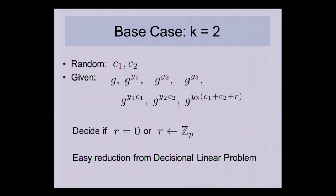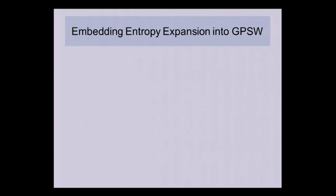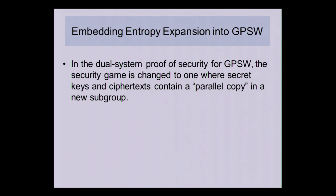This is the base case of the lemma when k equals 2. For general k we proceed by induction. Now, how do we embed this result — once we have it for all k — into GPSW, the actual original scheme?